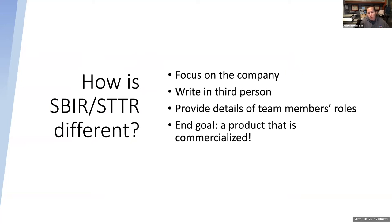The first is it's always really, really important to remember that the focus is on the company. It's the company that's getting the award. It's the company that's developing the technology that they are going to commercialize. So even if you're partnering with a research institution, everything needs to be focused on the company. One way I've found really works is to write the proposal in third person — that's best practice in grantsmanship in general, but especially important in SBIR. You can refer to the company by name or specific team members by name, and it helps reviewers develop an understanding of everybody's roles and reminds them it's a company submitting.